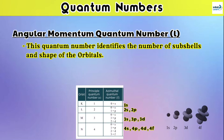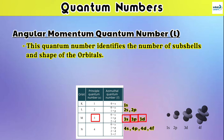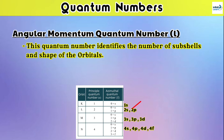For example, if we take the first shell with n = 1, it will contain a single subshell, which is 1S. The second shell with n = 2 contains two subshells: 2S and 2P. The third main shell has subshells 3S, 3P, and 3D. The fourth main shell has subshells 4S, 4P, 4D, and 4F. In this notation, the first number is the principal quantum number and the second value is the azimuthal quantum number.